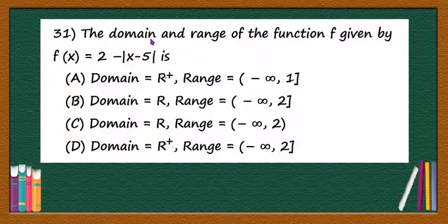and first let us find the domain of this function f(x) = 2 - |x - 5|. Here |x - 5| is defined for all real numbers, and so 2 - |x - 5| is also defined for all real numbers, therefore domain is set of real numbers.